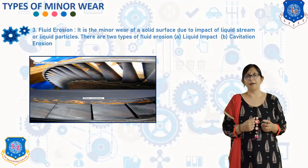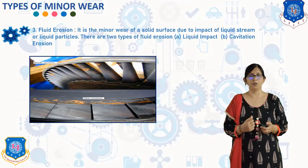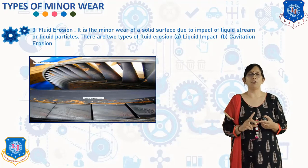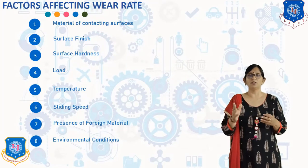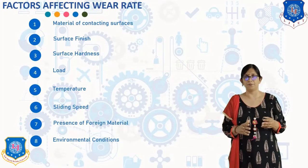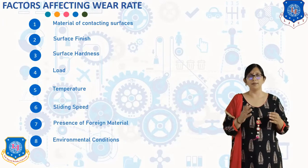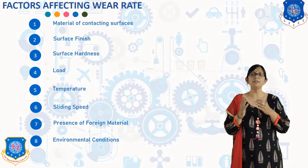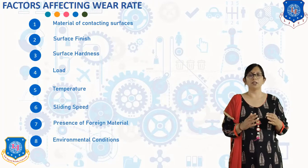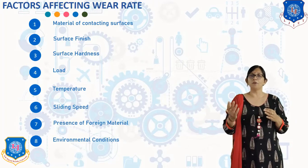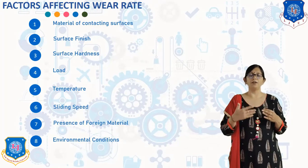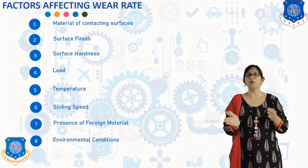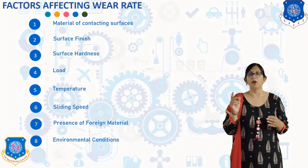Now we will discuss the factors affecting the wear rate. The first factor is the material of the contacting surface. Generally, softer materials wear at a faster rate. Materials with good wear resistance should be used for contacting surfaces having relative motion. Use of similar materials for both contacting surfaces should be avoided — softer material gives a high wear rate and harder material gives a low wear rate.